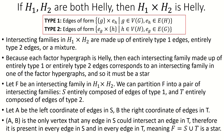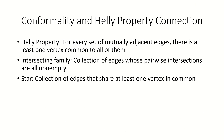Notice that our theorem fails if either of the factors is not Helly, as that would mean there's an intersecting family that's not a star in one of the copies of the non-Helly factor, rendering the product non-Helly as well. This lets us strengthen our theorem into a biconditional statement.